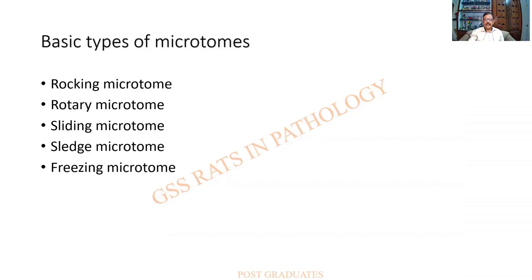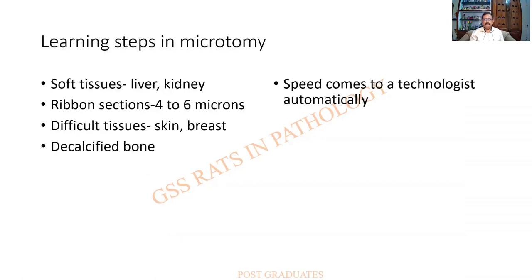These five types are incorporated in the standard text. Whenever learning microtomy, these steps are suggested: first, practice on soft tissues such as liver and kidney; then go on to ribbon sections about four to six microns in thickness; then to difficult tissues such as skin or breast; and finally decalcified bone. Do not worry about speed — in any technique, speed will come automatically.